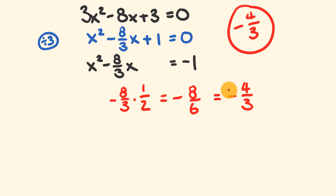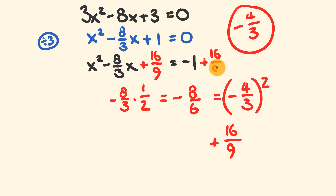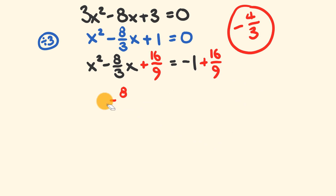The next thing we do is square that value. A negative times a negative is a positive, so it cancels out. We end up with 4 times 4, which is 16, over 3 times 3, which is 9 — giving us 16 over 9. Now we add this result to both sides, so we end up with plus 16 over 9 on the left, and also plus 16 over 9 on the right, to keep everything balanced.